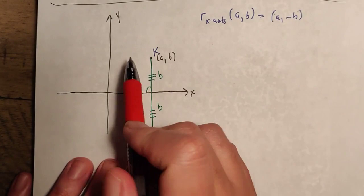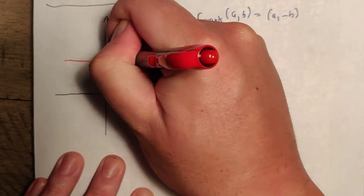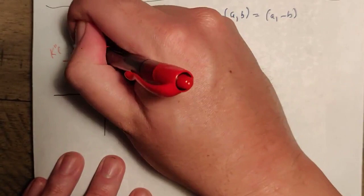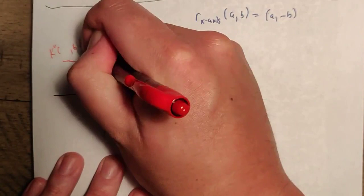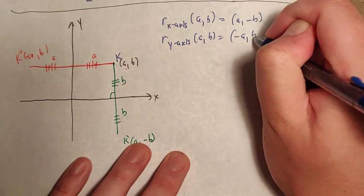We can do the same thing when reflecting over the y-axis. The y-axis is a vertical line, so the line joining K to its image K prime is going to be horizontal. We want these distances to be exactly the same again. Since it's horizontal, the y-coordinate doesn't change, so we end up with B. There are A units on one side, so A units on the other gives us negative A. A reflection over the y-axis of A, B gives negative A, B — we're just sticking a negative sign in front of the x-coordinate.